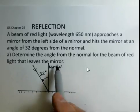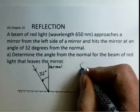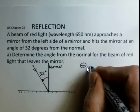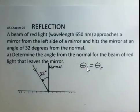So 32 degrees. We want to know what's the angle as this beam bounces off of the mirror. Well there's a relationship to use for that. The incident angle is equal to the reflected angle. Theta I equals theta R.